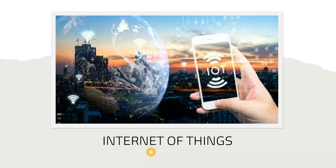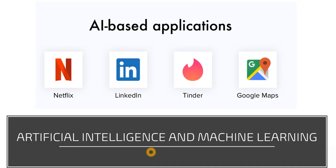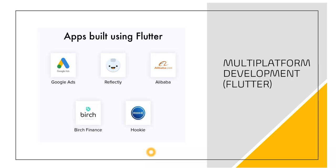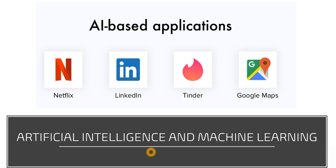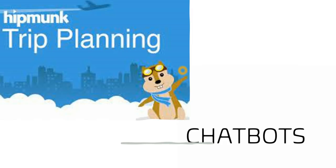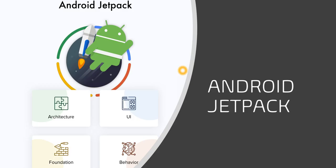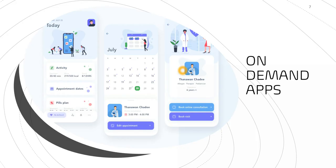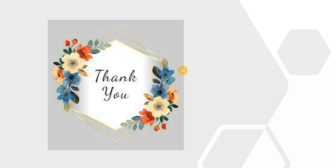Those were the seven different trends in 2023 where app developers are focusing. To summarize: Instant Apps was the first trend, multi-platform development using Flutter was the second, artificial intelligence and machine learning applications third — with Netflix, LinkedIn, Tinder, and Google Maps already using these technologies. The fourth was chatbots, with Hipmonk Trip Planning as an example. The fifth is Android Jetpack, on-demand apps was the sixth, and Internet of Things was the seventh. Thanks everyone for your time and watching this video. I'll see you all soon in my next session with a new topic. Until then, take care, stay home, stay safe. Signing off — Dimple. Bye.